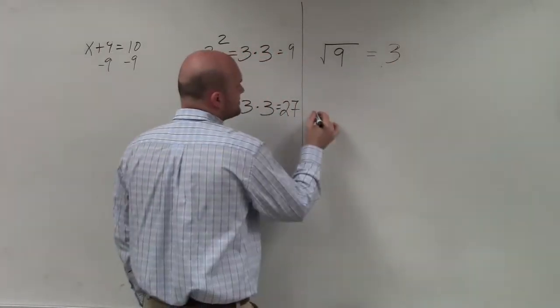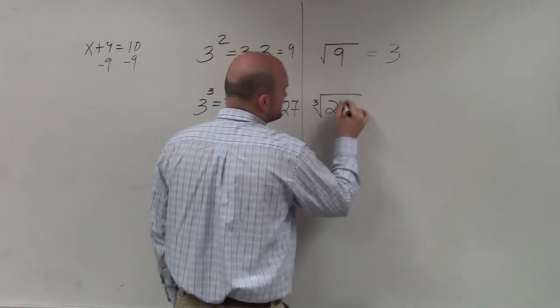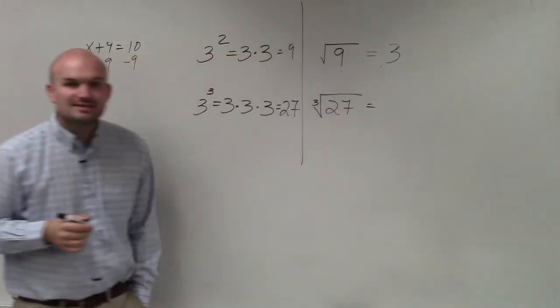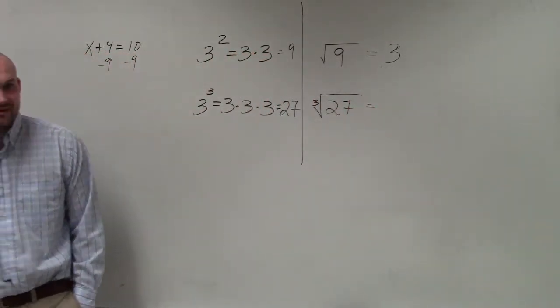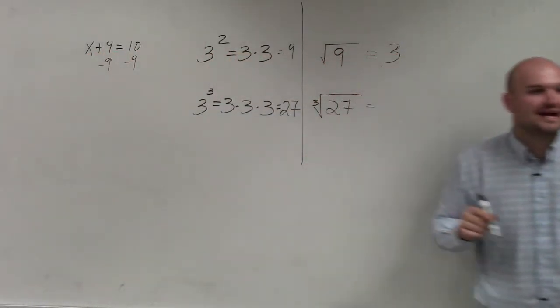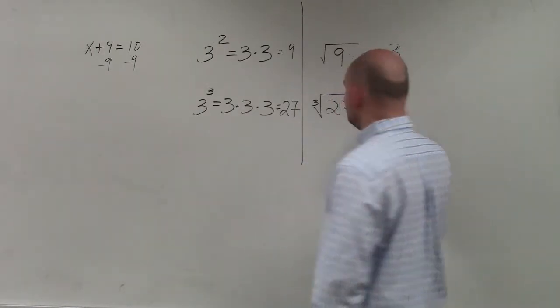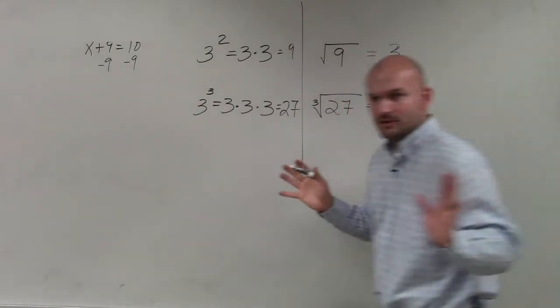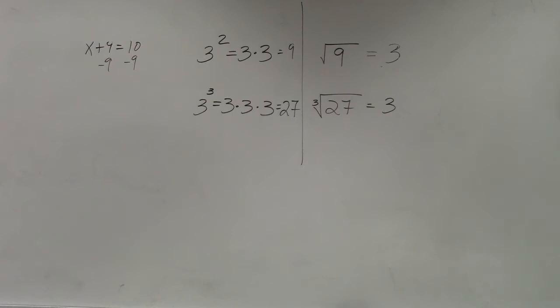So therefore, if I was going to take the cube root of 27, we can all reason that the cube root of 27 is going to be? What number multiplied by itself 3 times gives us 27? 3. 3. Is everybody OK with this?